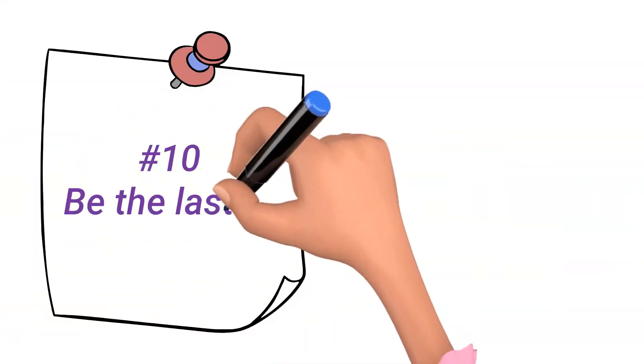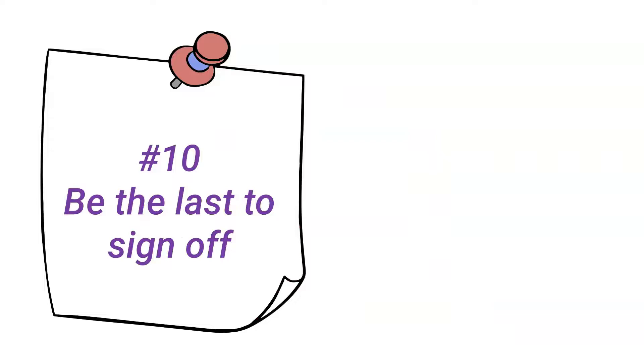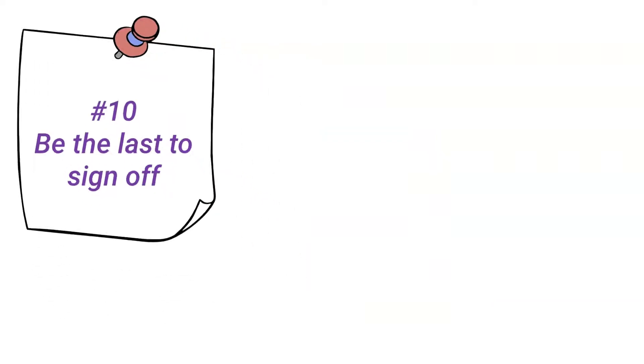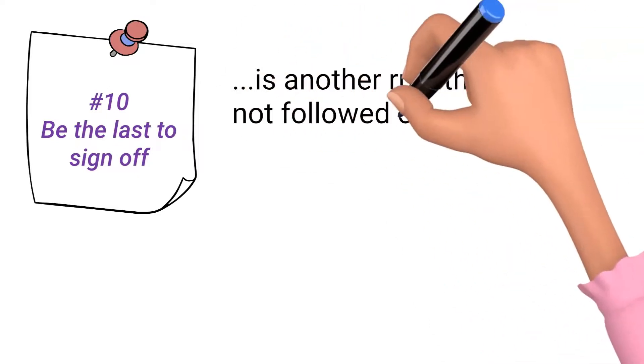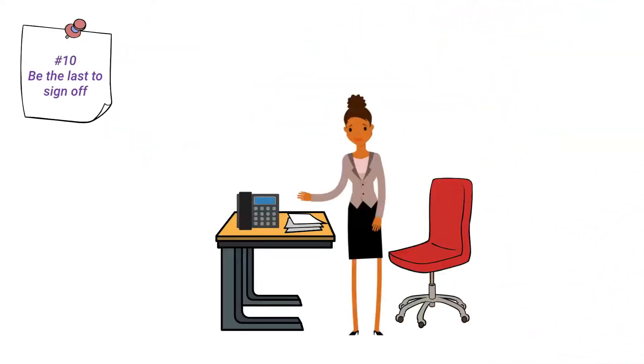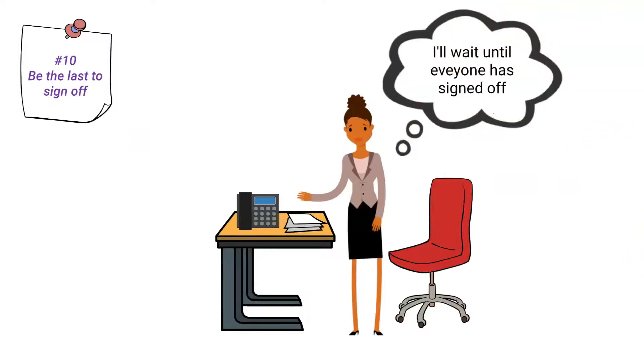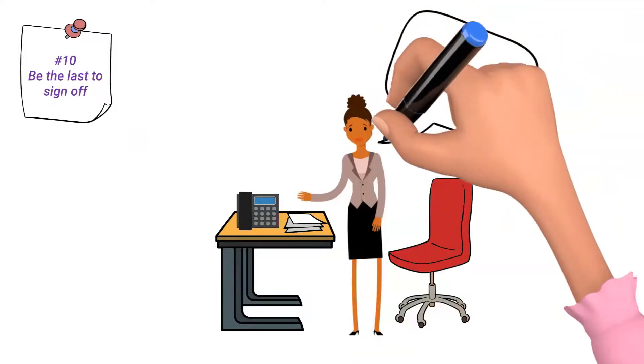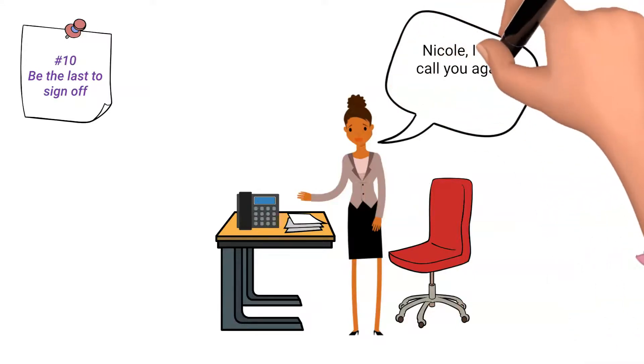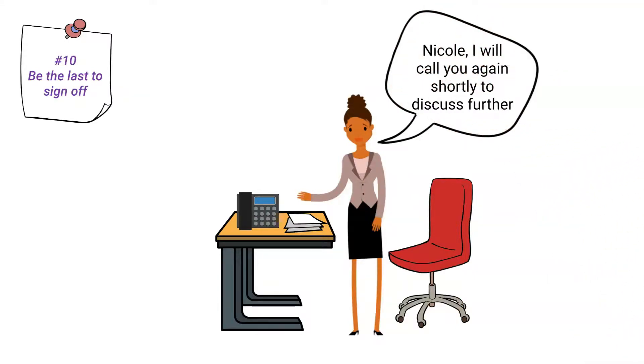Number 10. Be the last to sign off conference call facilities. This final conference call meeting etiquette rule is another rule that is not followed consistently. As the host, it is good practice to be the last to sign off, but a vital point to note. Do not continue to discuss the meeting with selected colleagues on the same conference call session after the meeting has ended. You never know who could still be connected to the call.